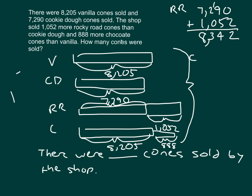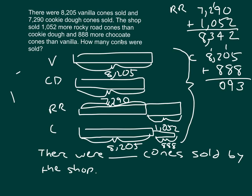For chocolate, we add 8,205 and 888 because it was 888 more chocolate cones than vanilla. 5 plus 8 is 13. In the tens place, 1 plus 8 is 9. 2 hundreds plus 8 hundreds equals 10 hundreds — place a 0 and regroup 1 to the thousands place. 1 plus 8 is 9. So there are 9,093 chocolate cones.